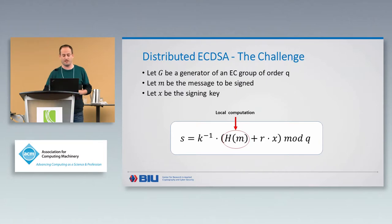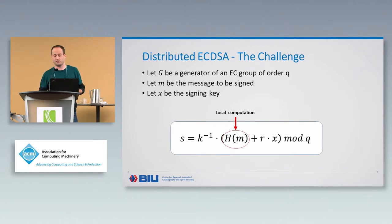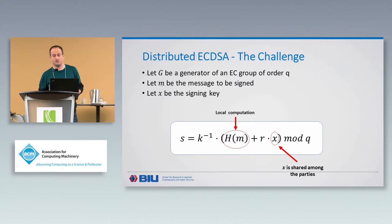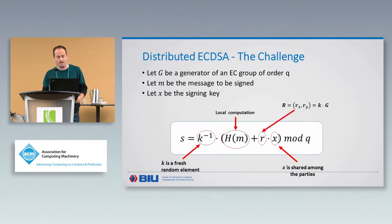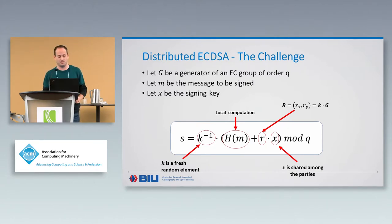Looking at the formula more closely: H(M) is just a hash of the message, which in the distributed setting can be locally computed because the message is known by all parties. X is the signing key that in the distributed setting should be shared among the parties. K is a fresh random element chosen each time we want to sign — a new random element for each signature. R is also computed using K: we take K, multiply it with the generator G, obtain a point on the elliptic curve, and take its X coordinate, denoted as small r.